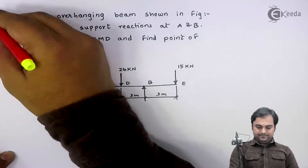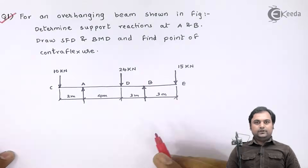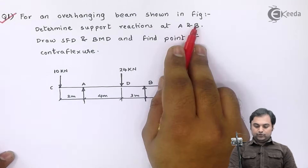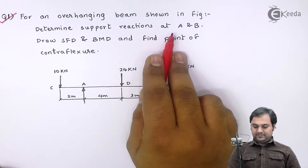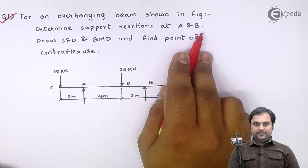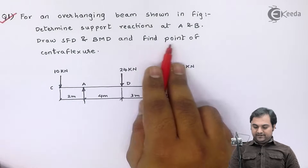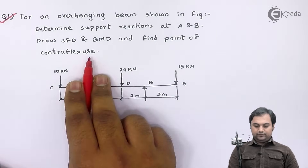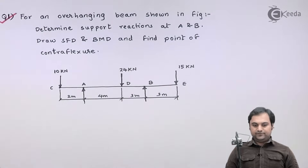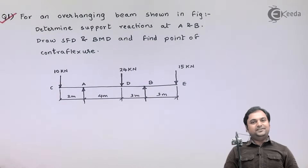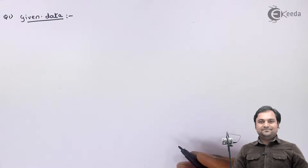Let us take this first question. For an overhanging beam shown in the figure, determine support reactions at A and B, draw SFD and BMD, and find the point of contraflexure. This is the question we have in front of us. Let us try to write the data first — here I will draw the beam which is given.